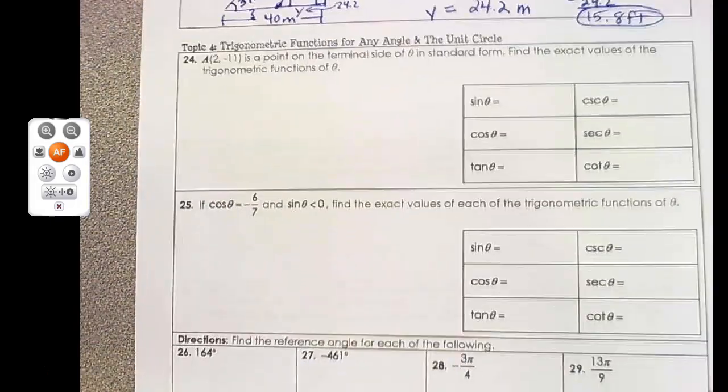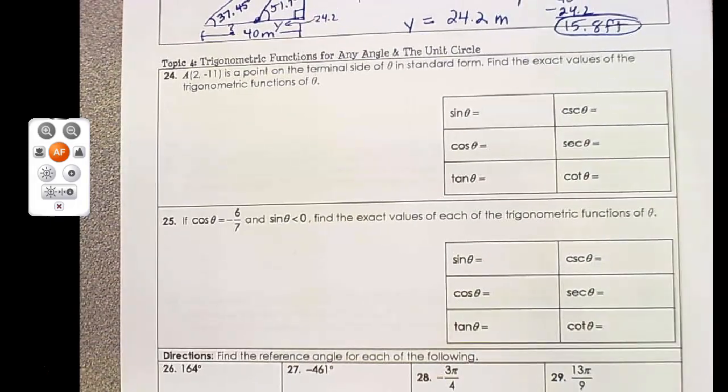So number 24 and topic 4 is to find trig functions for any angle and use the unit circle. So I'm going to end this video and start a video for part two. Thanks for listening.